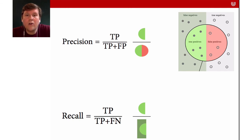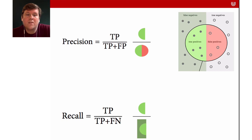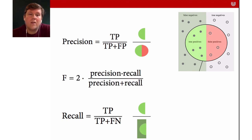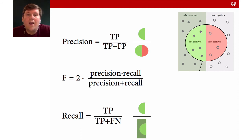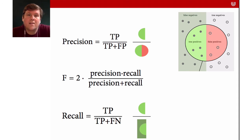If we look at precision and recall, we're much better at finding situations where the model doesn't learn anything. You can combine precision and recall into one metric — the so-called F1 metric — which takes the harmonic mean between precision and recall. I highly recommend using this instead of accuracy in the models and reports for this lecture.